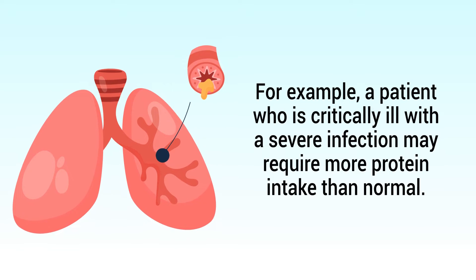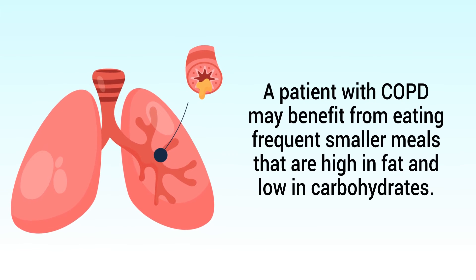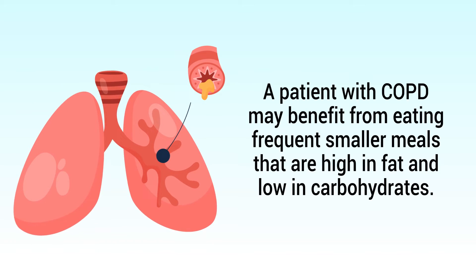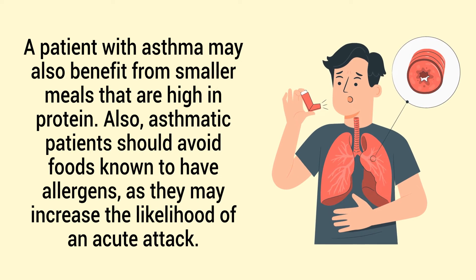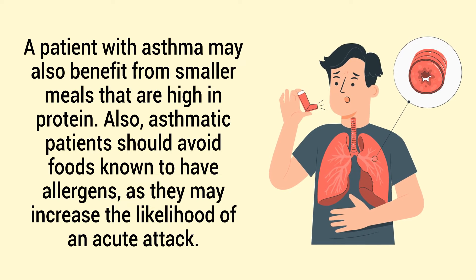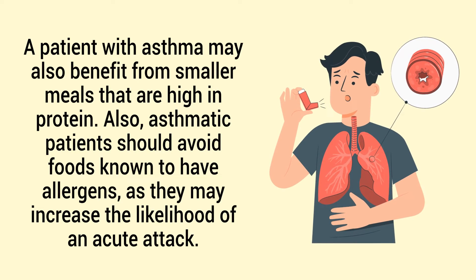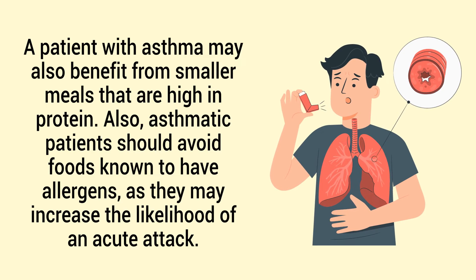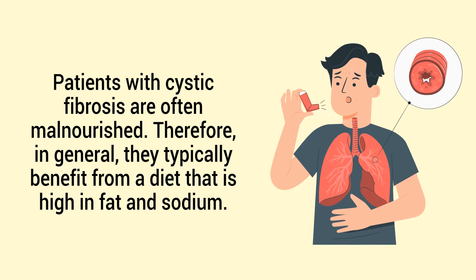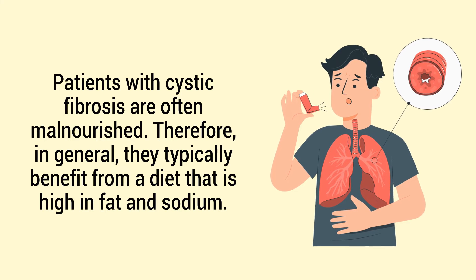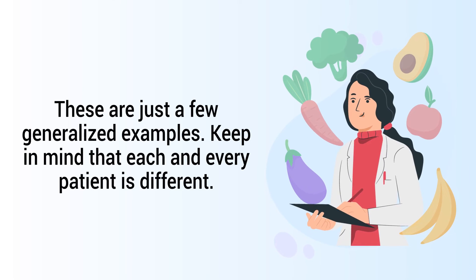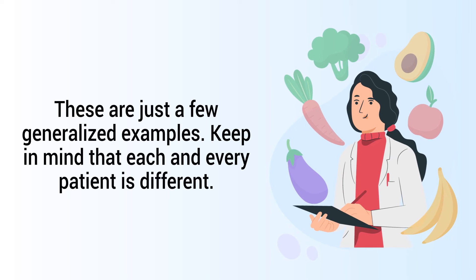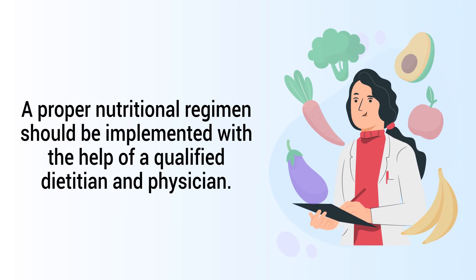For example, a patient who is critically ill with a severe infection may require more protein intake than normal. A patient with COPD may benefit from eating frequent smaller meals that are high in fat and low in carbohydrates. A patient with asthma may benefit from smaller meals that are high in protein, and asthmatic patients should avoid foods known to have allergens, as they may increase the likelihood of an acute attack. Patients with cystic fibrosis are often malnourished, and in general they typically benefit from a diet that is high in fat and sodium.